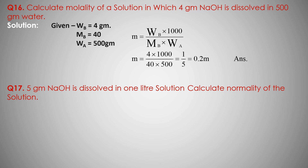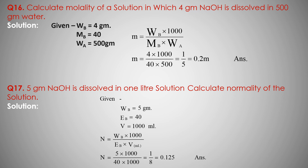Next, question number 17: 5 gram NaOH is dissolved in 1 liter solution. Calculate the normality of the solution. Mass of solute is 5 gram NaOH. Equivalent mass of NaOH is 40. Volume is 1 liter, converting to milliliter: 1 liter equals 1000 milliliter.